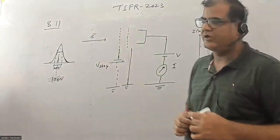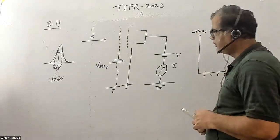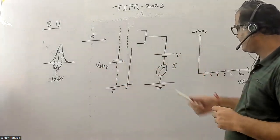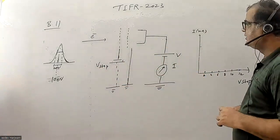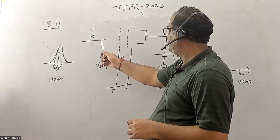Hello students, let us solve one more problem from this year's TFIR. The question number is B11. They have given you one electronic setup, and they say that one electron beam is coming and this electron beam is collected by this electronic setup.